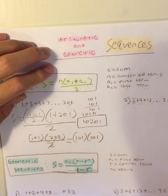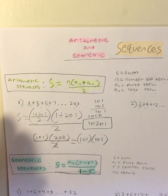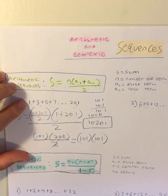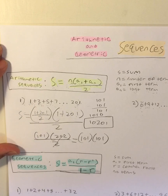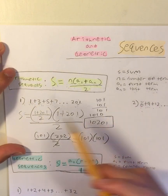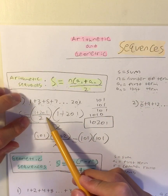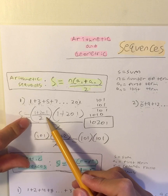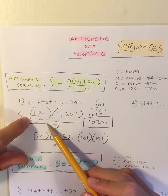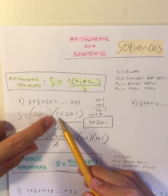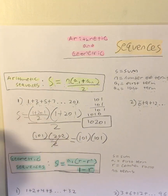And boom, that's going to be your answer for the sum of this sequence. That's how you solve it. You find the sum by finding the number of terms in the sequence, then add the first term and the last term, and divide everything by 2.